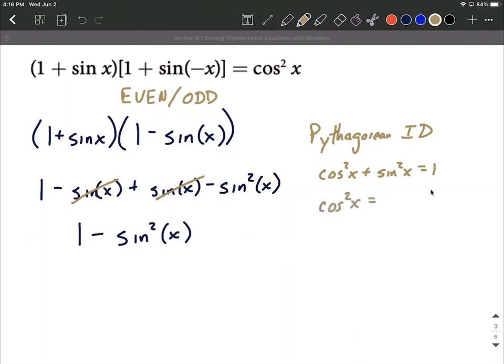Cosine squared of x equals 1 minus sine squared of x. So subtracting the sine squared, moving it over to the right-hand side, where you see 1 minus sine squared of x, you can replace with cosine squared of x.